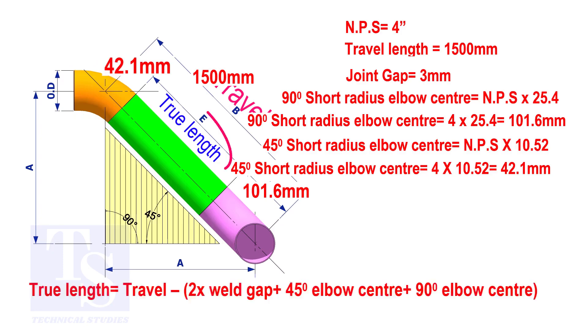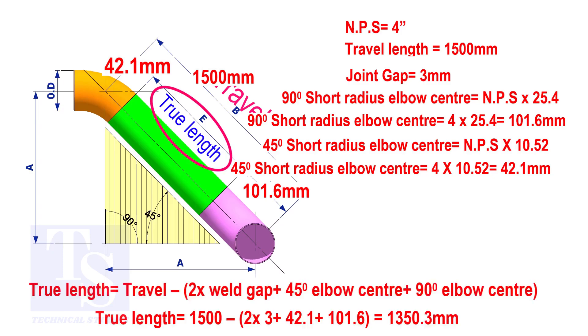To calculate the true length of the pipe, subtract two weld gaps plus both elbow centers from the travel length. The true length of the pipe is 1350.3 millimeters.